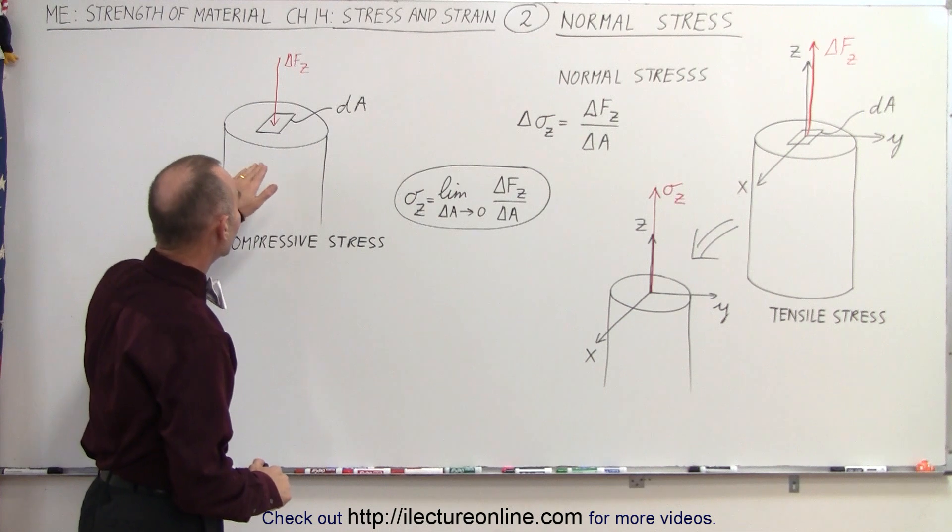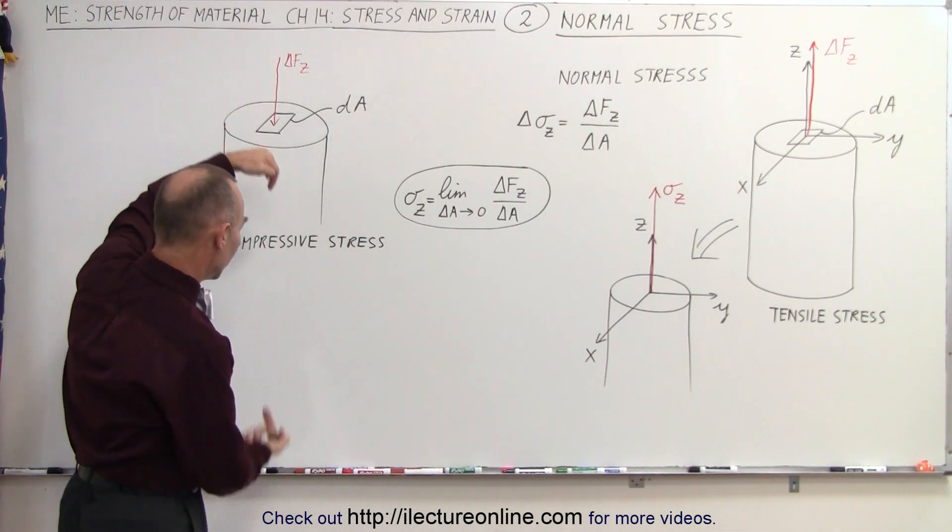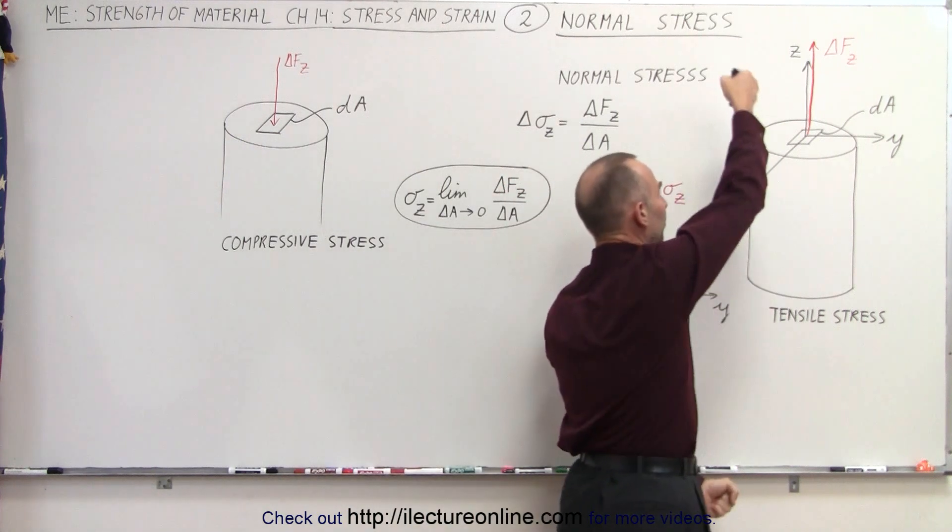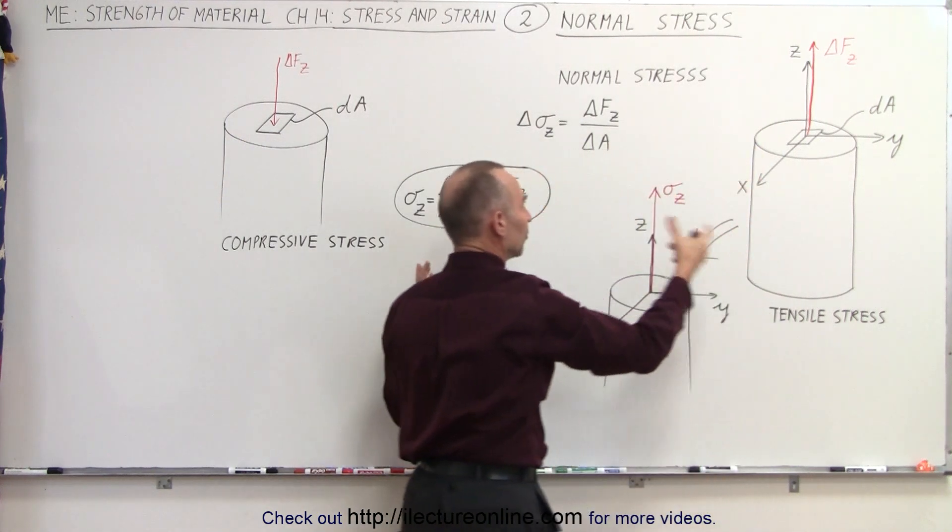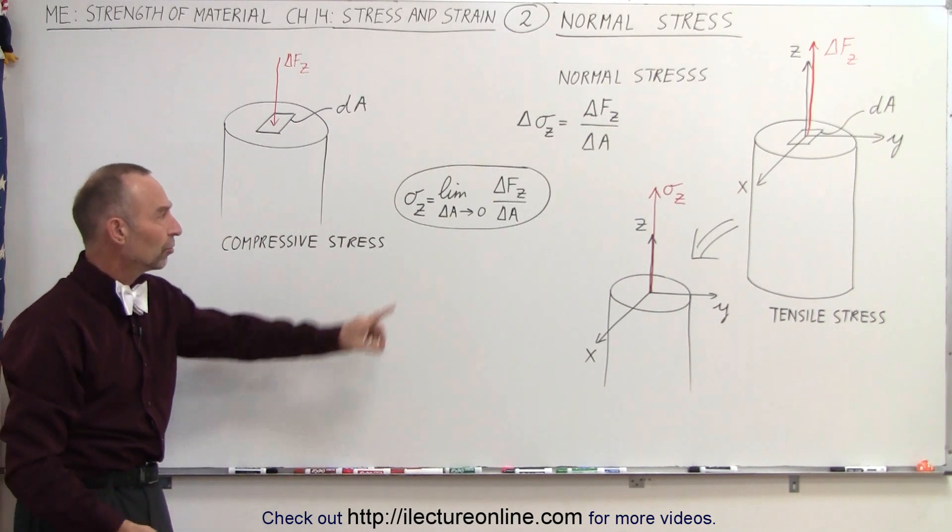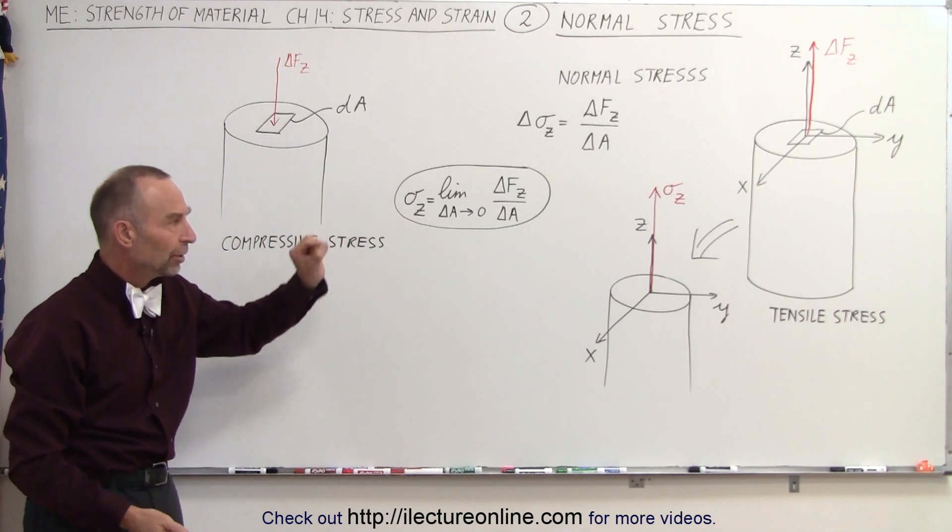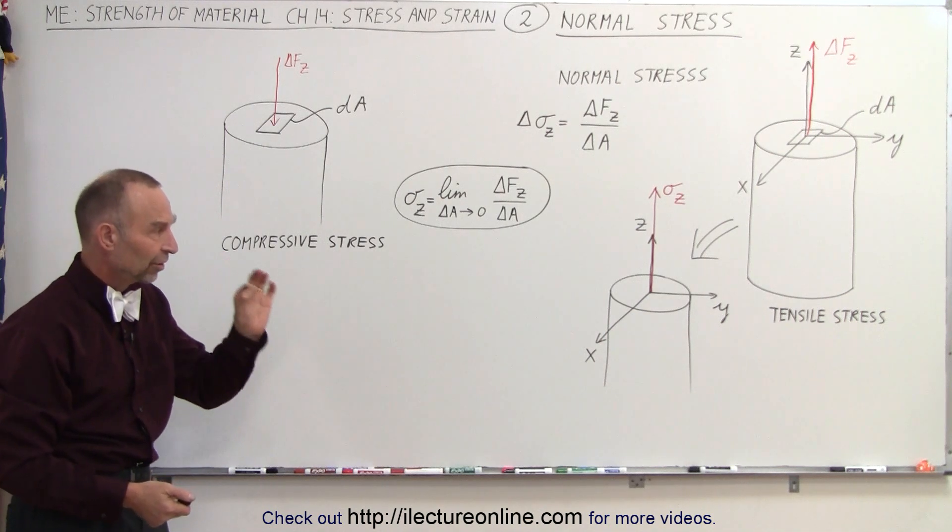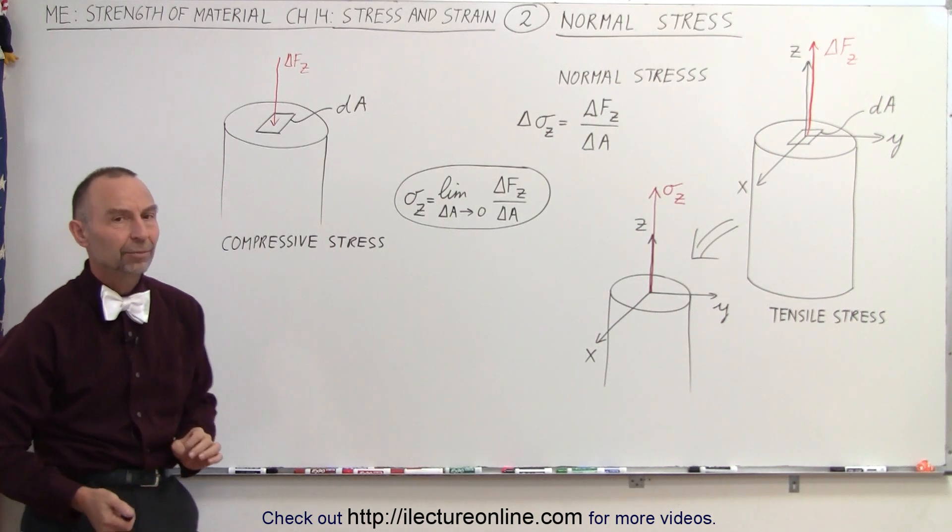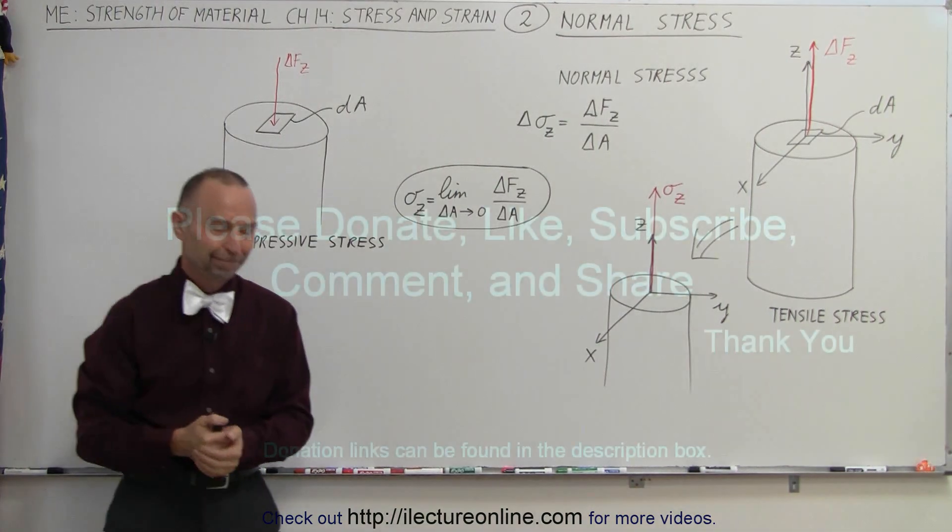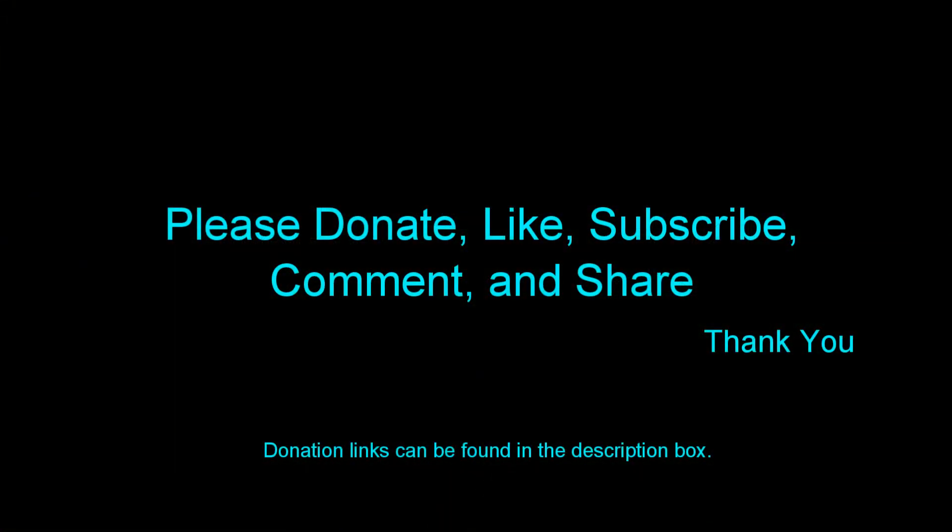So again, we have compressive stress when the force is pointed towards the material. We have tensile stress when the forces are pulling away from the material, and so that causes those internal forces to exist. Again, notice we can then take the limit at any point inside the material and then define the normal stress as the stress at that particular point inside the material. And that is how it's defined.